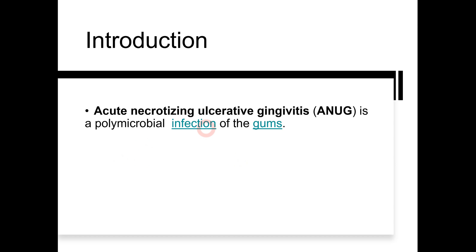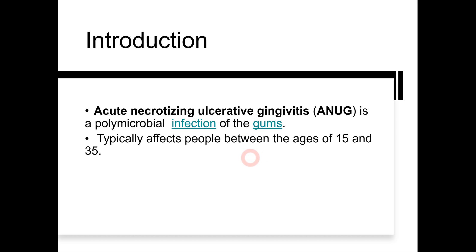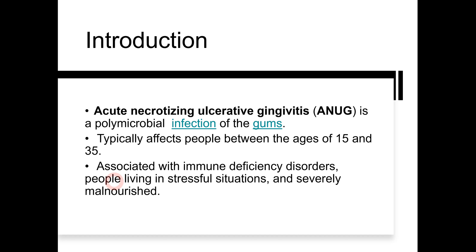Acute necrotizing ulcerative gingivitis — ANUG — is basically a polymicrobial infection of the gums. Polymicrobial means that a wide spectrum of bacteria is involved in causing this disease, which affects the gums or gingiva of the patient. The typical incidence is in patients between 15 to 35 years, though cases can occur outside this range. Important systemic conditions to recognize include immunodeficiency disorders, high stress, anxiety, depression, and severe malnourishment.